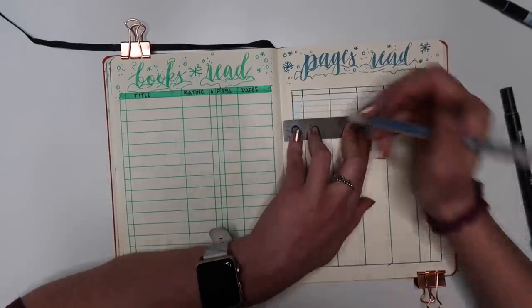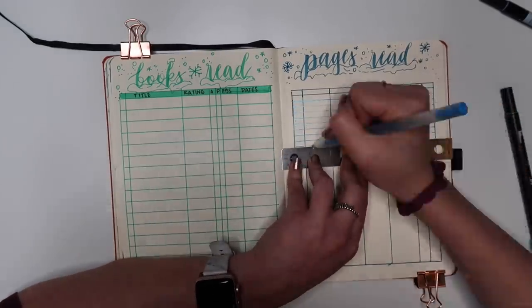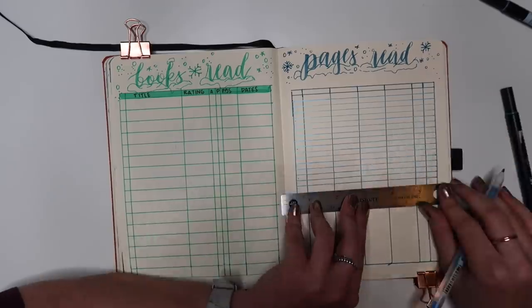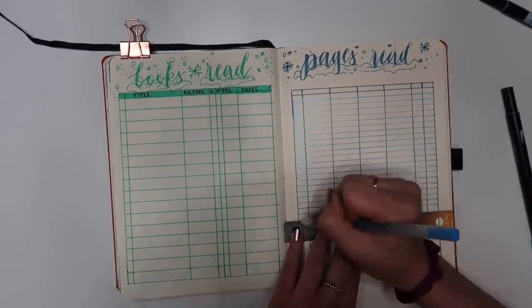Now I do end up going for a metallic gel pen for the lines in my pages read spread and I really wish I'd done this for books read as well. I just think it definitely adds some dimension to it.